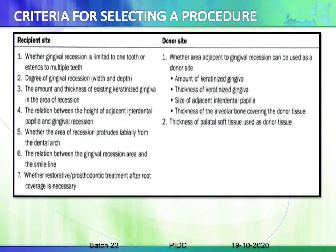Criteria for selecting a procedure at the recipient site include: whether recession is limited to one tooth or extends to multiple teeth; the degree of gingival recession; the amount and thickness of existing keratinized gingiva in the recession area; the relation between the height of adjacent interdental papilla and the recession; and whether the area protrudes labially from the dental arch.